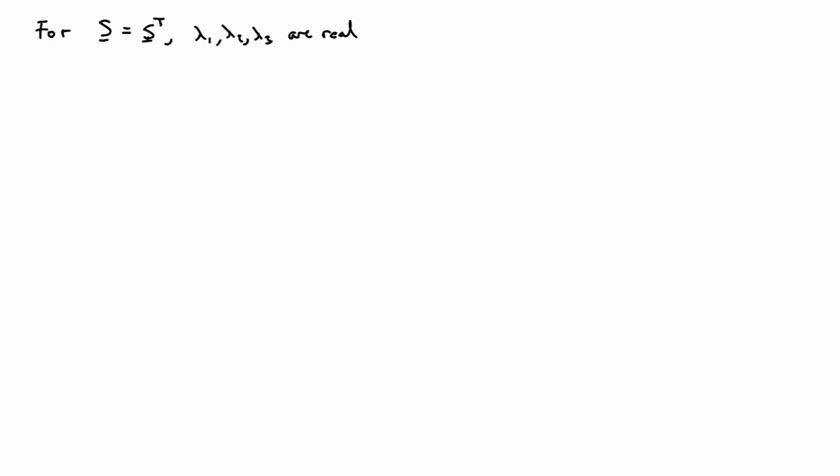And there'll be three of them because it's a third order polynomial. So we'll call them lambda one, lambda two, lambda three. And they'll have corresponding eigenvectors. And in general, if lambda one doesn't equal lambda two is not equal to lambda three, so the roots are distinct, then we'll call the vectors v one, v two, and v three.